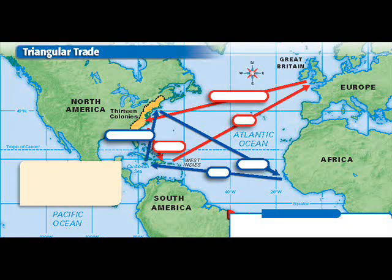Triangular Trade. Trade between the American colonies and Great Britain was not direct. Rather, it generally took the form of triangular trade, a system in which goods and slaves were traded among the Americas, Britain, and Africa.